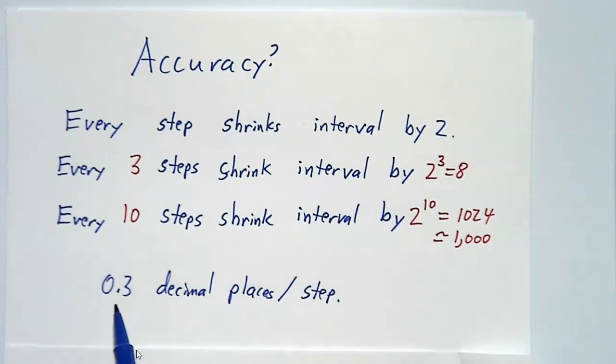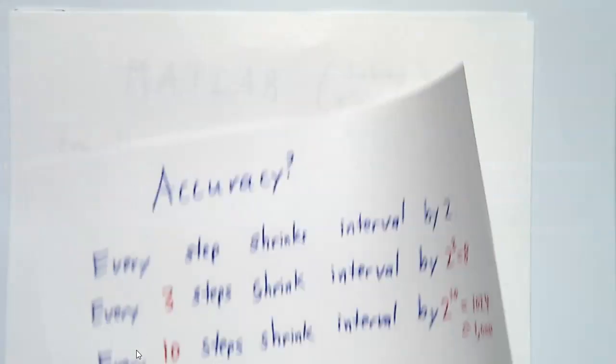Or, roughly speaking, we get 0.3 decimal places for every step we take.